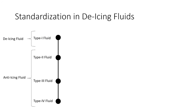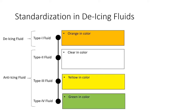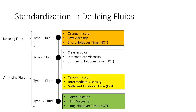You can distinguish the type of fluid from its color. Type 1 fluids are orange, Type 2 fluids are colorless, Type 3 fluids are yellow, and Type 4 fluids are green. As we go down the types of fluids, their viscosity increases. A more viscous fluid will stick to the aircraft surface longer, making its hold over time longer. Therefore, anti-icing fluids have higher viscosity. Type 2 fluids are used on smaller aircraft because they shear away from the aircraft body at relatively low speeds and therefore are not suitable for larger aircraft.